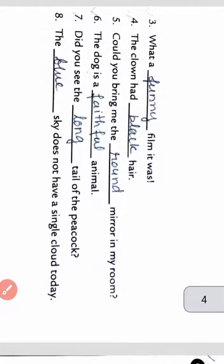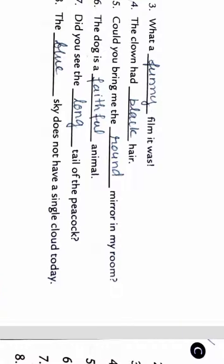Then question number C. What a blank film it was. So what will be in the blank? Funny. Funny film it was. Fourth is: The clown had blank hair. So here we have black hairs. Fifth is: Could you bring me the blank round mirror in my room? So the answer will be round. Sixth is: The dog is a blank animal. Faithful animal.